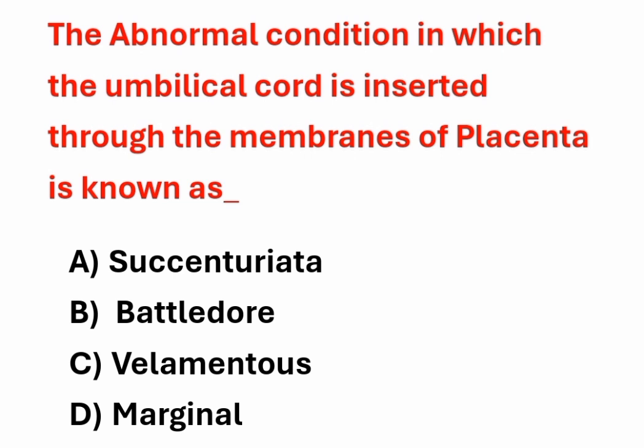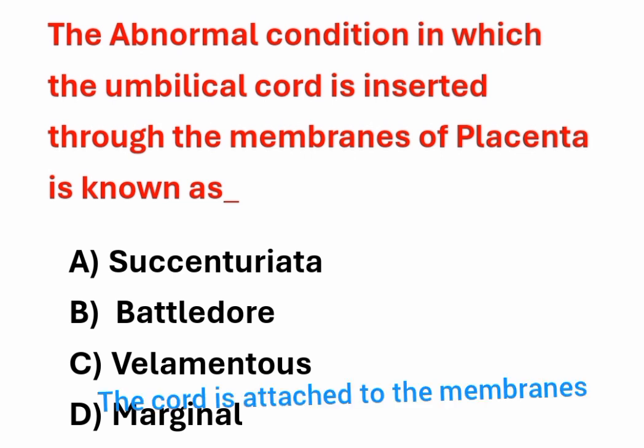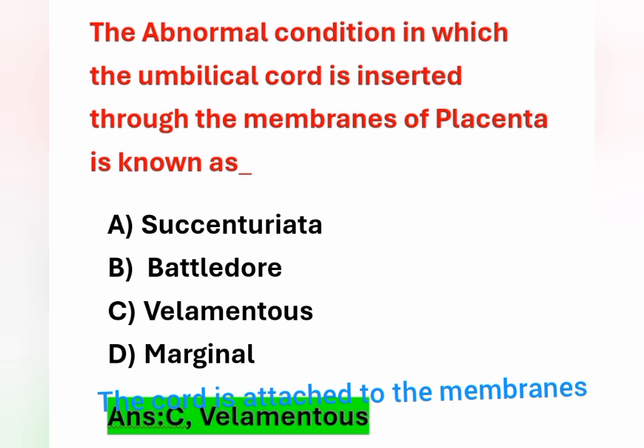First question: the abnormal condition in which the umbilical cord is inserted through the membranes of the placenta is known as? Options: A) Vasa praevia, B) Battledore, C) Velamentous, D) Marginal. The correct answer is velamentous placenta — this is a cord abnormality where the umbilical cord is attached to the membrane of the placenta.